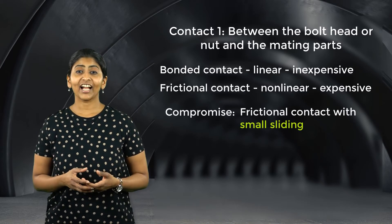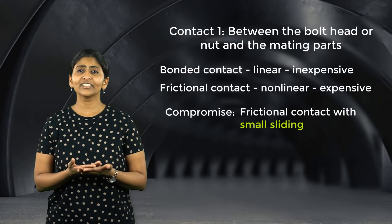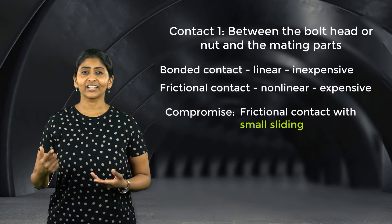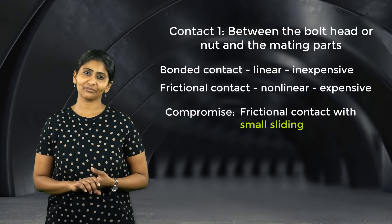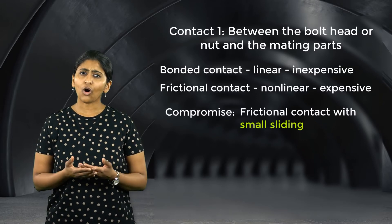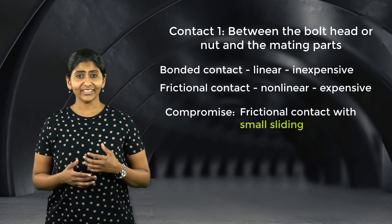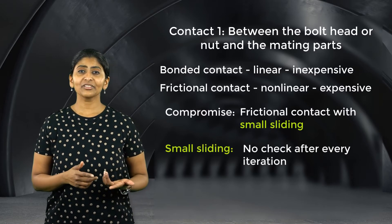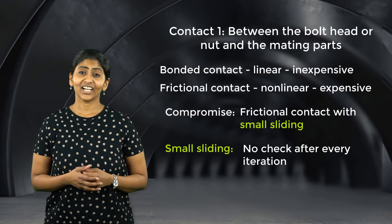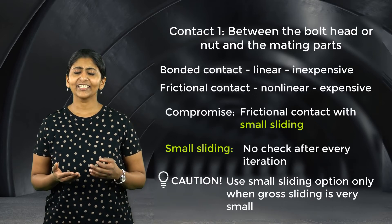In a frictional contact, at the end of every iteration, the solver checks whether the two surfaces in contact are still within a certain tolerable distance of each other. This checking after every iteration is an additional step which increases the solve time. But when the small sliding option is used, we specify that the two surfaces will always be within the tolerable distance of each other, so the solver does not need to check this after every iteration, which reduces the computational cost. But we need to be very careful — the small sliding option should only be used when the gross sliding between the surfaces in contact is very small.